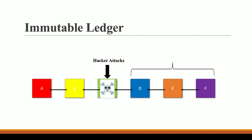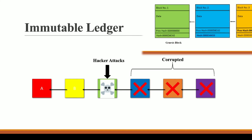If you watched the previous video, we discussed that each new block contains the hash of the previous block. So block D contains the hash of block C in its previous hash field, and similarly for blocks E and F. Once block C gets corrupted, the data in D, E, and F also gets corrupted. Here you can see in the presentation: if someone changes data in block C, the hash of block C changes because all those fields are used to compute the hash.